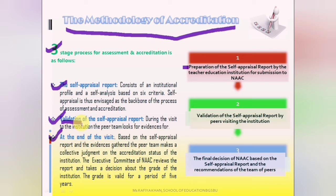To determine whether the report is valid and correct, a peer team is formed. This team comes to your institution for a visit of three to four days. During those days, they assess all criteria across every department, infrastructure, academic field, research activity, and administration. The institution first prepares the report on the basis of the seven criteria and submits it to NAAC. NAAC reviews and assesses the report.